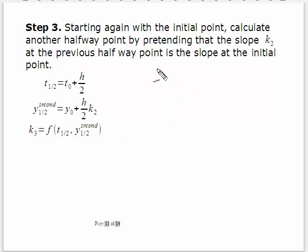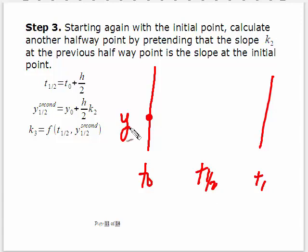So now I've got K1, which is the slope from the first point. I move over to this halfway point, and I calculate a K2. And I'm not done yet. I go back to my original. So here was my T0. Here's T1. Here's T to the 1 half.